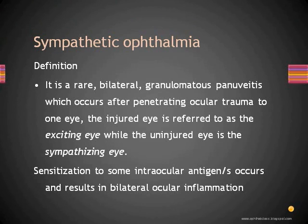Let us first start with sympathetic ophthalmia, also called sympathetic ophthalmitis or sympathetic uveitis. It is a rare disorder that causes pan uveitis in both eyes. It is an unfortunate sequence of events following penetrating injury in one eye, where the patient could lose vision in both eyes due to inflammation. By definition, it is a rare bilateral granulomatous pan uveitis that occurs after penetrating ocular trauma to one eye only.